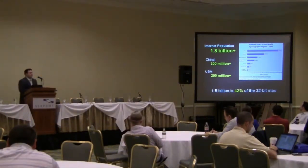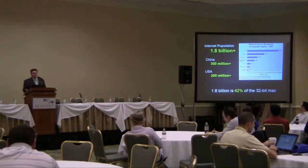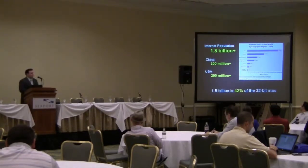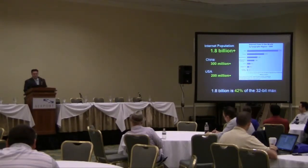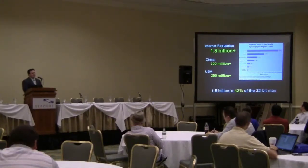Looking at total internet users globally — the last survey was 2009 — there are actually 1.8 billion people using the internet today. Asia makes up 764 million of those, Europe has 425 million, and North America is only 260 million, with 200 million of those being the US. China alone is at 300 million versus the US at 200 million. The 1.8 billion number is interesting because that's about 42% of the 32-bit maximum — we're actually getting pretty close to filling a significant number of those bits in terms of tracking internet users.